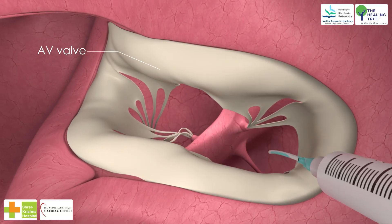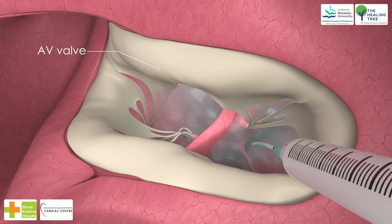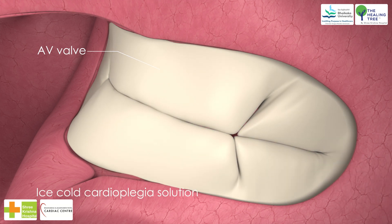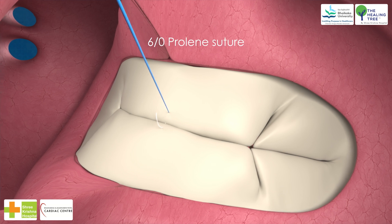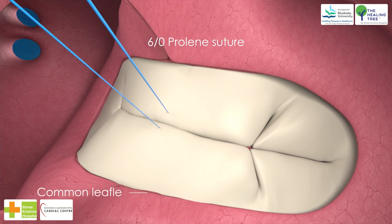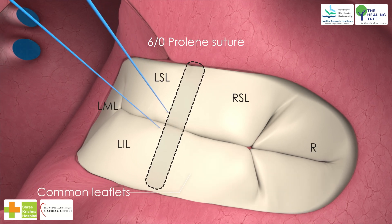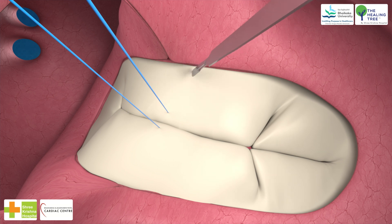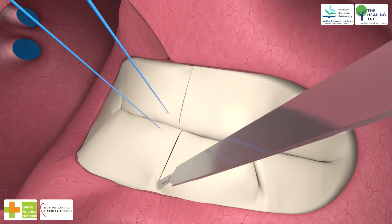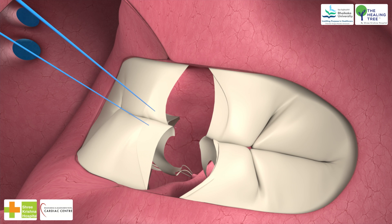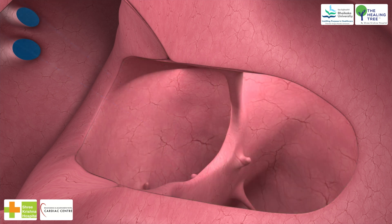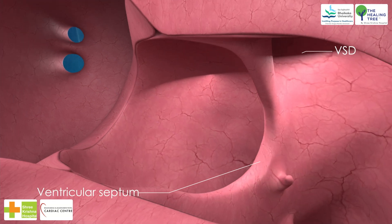Traditional single patch technique operative steps: (1) The exact apposition of the superior and inferior common leaflets is determined by floating the leaflets with ice-cold cardioplegia solution. A single 6-0 Prolene suture is placed through these leaflets over the crest of the ventricular septum to maintain accurate coaptation during incision. (2) The superior and inferior common leaflets are incised a little to the right of the middle of the crest of the ventricular septum. An autologous pericardial patch is sutured to the middle of the ventricular septum using continuous 5-0 Prolene reinforced with pledgeted sutures if necessary.